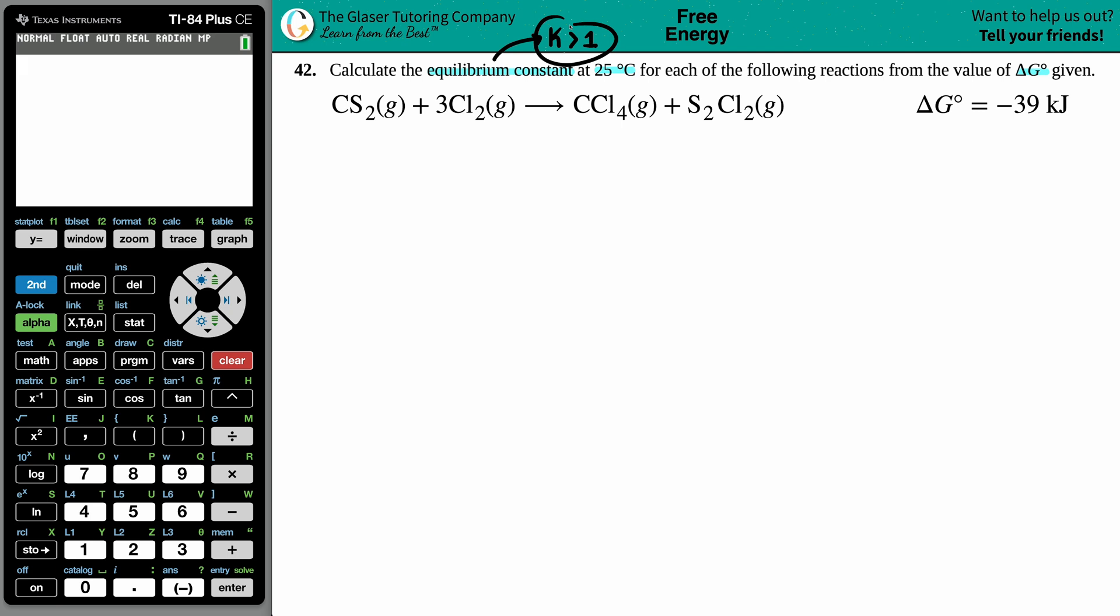So anytime that you have a spontaneous reaction, your equilibrium constant should be greater than one. Let's see if our hypothesis is true. Now we are solving for K, that's the equilibrium constant. Doesn't matter what K value it is - Ka, Kb, Kc - there's only one formula that links equilibrium constant with your Gibbs free energy, and that's this formula right here.